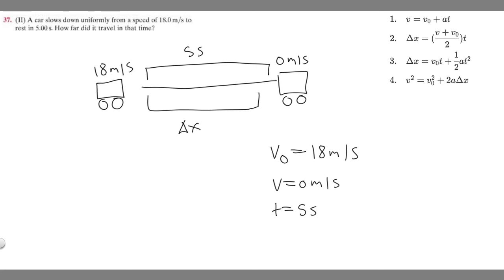seconds. We're trying to find the distance it traveled, so Δx. We're given these variables, and if you see equations one, three, and four all contain acceleration, so we can't use those because we're not given any acceleration. We're going to have to use this one, and